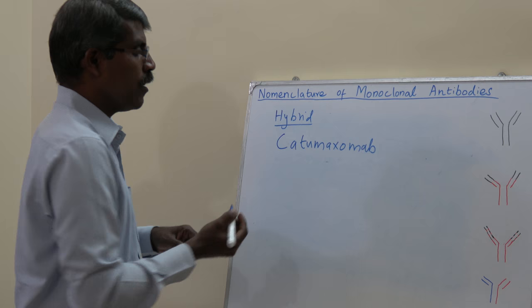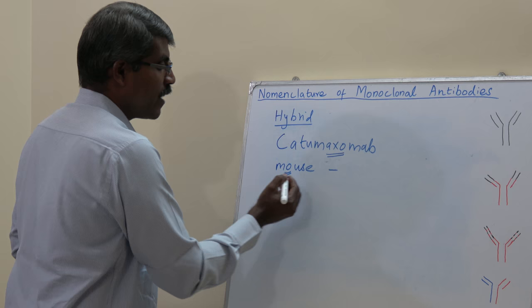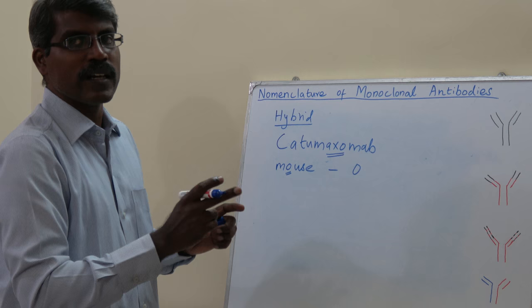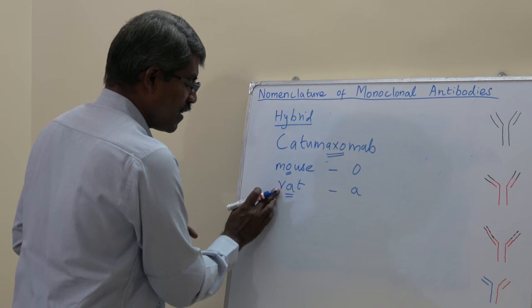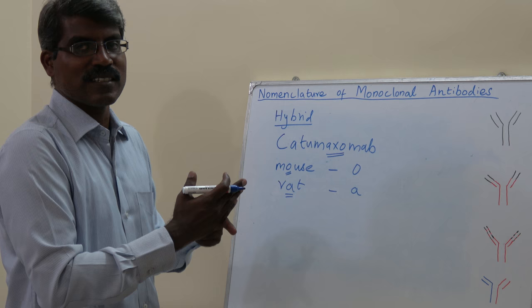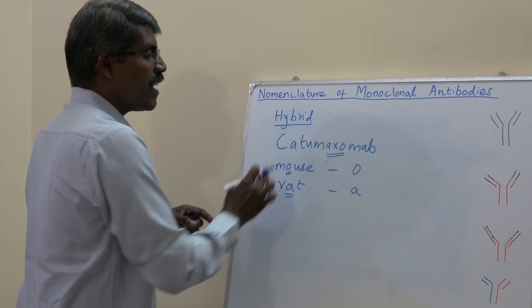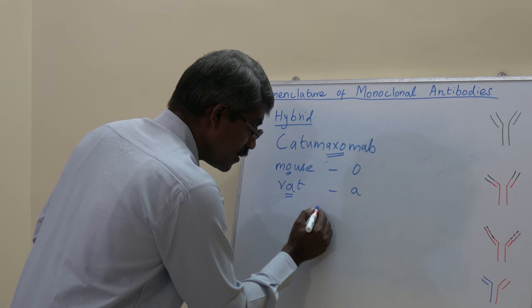An example is catumaxomab. In the nomenclature for hybrids, species letters are combined with a cross symbol. 'o' represents mouse, 'a' represents rat, 'e' represents hamster, and 'u' represents human. In catumaxomab, 'a' and 'o' are combined, indicating it is a hybrid of rat and mouse.